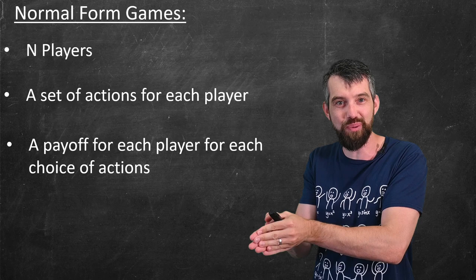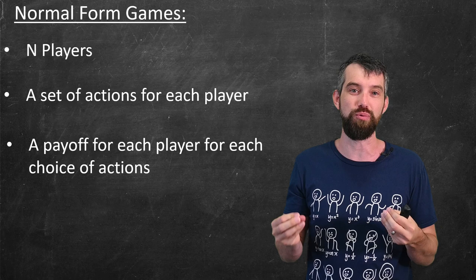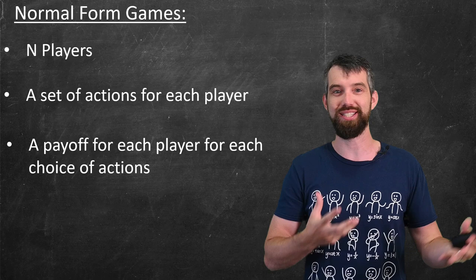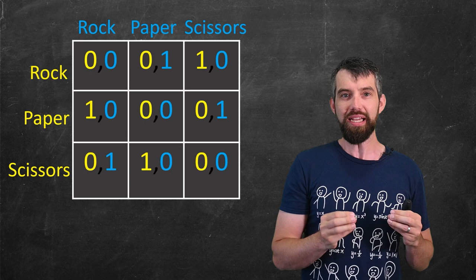And finally, there's a payoff. There's a way to know who's actually going to win. If one person plays rock and the other person plays paper, for example, then the one who played paper is going to win, and the one who played rock is going to lose. That is, there's a defined outcome for every possible set of choices of actions of the players. Now, what's wonderful about normal form games like this is that we can express them in a very nice way with something called a payoff matrix. And this is the payoff matrix for rock, paper, scissors.